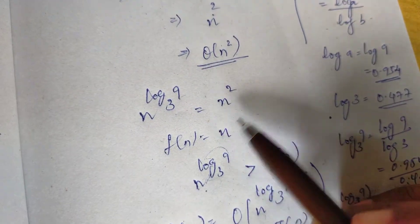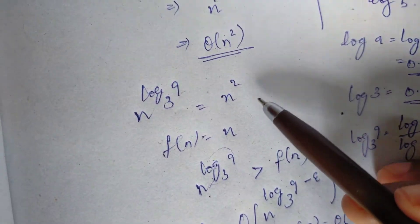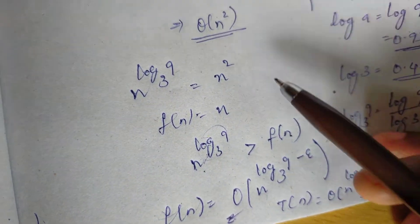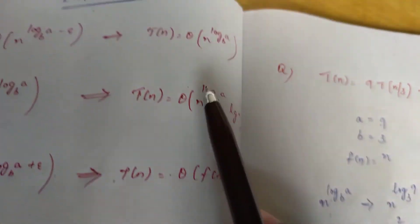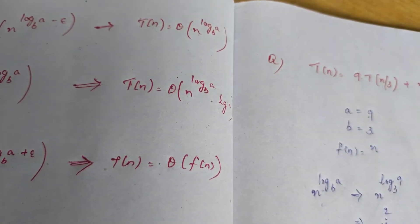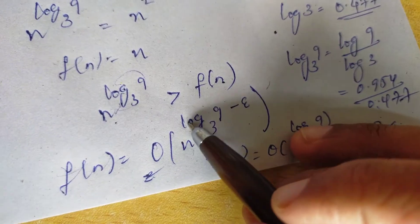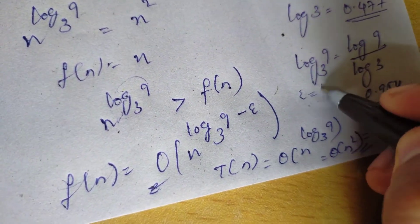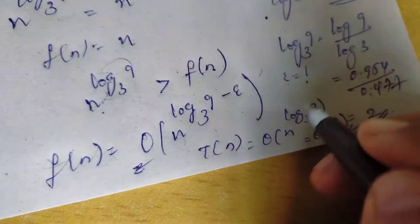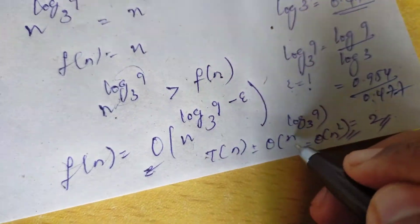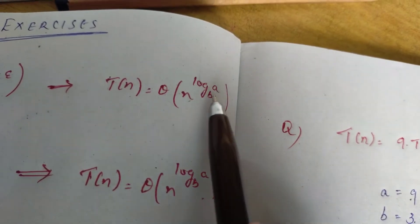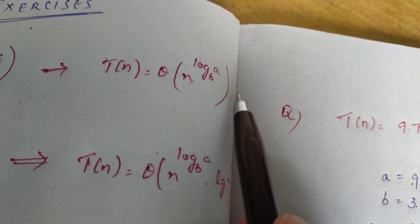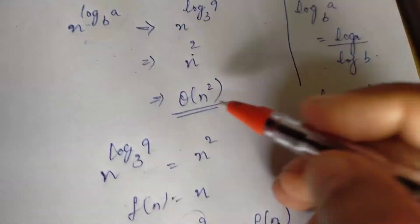Now we have to confirm and compare f of n to n power log a base b. That is theta of n squared — n squared is the solution.